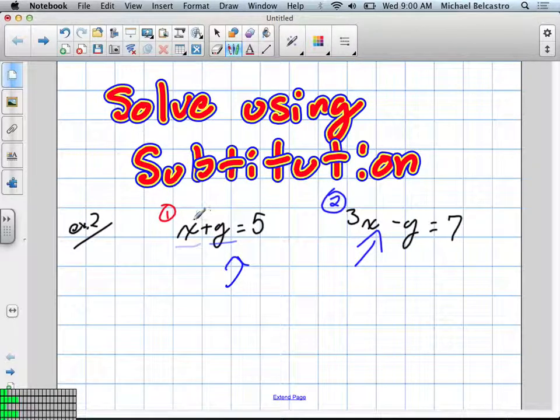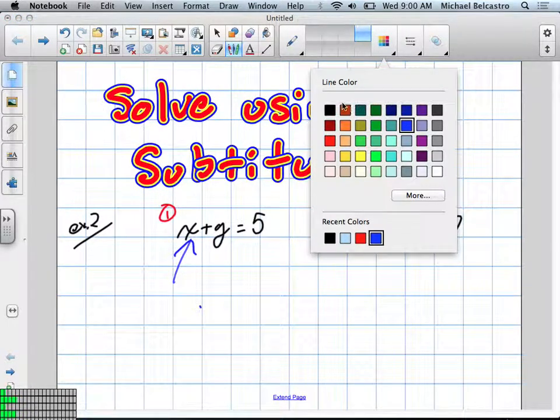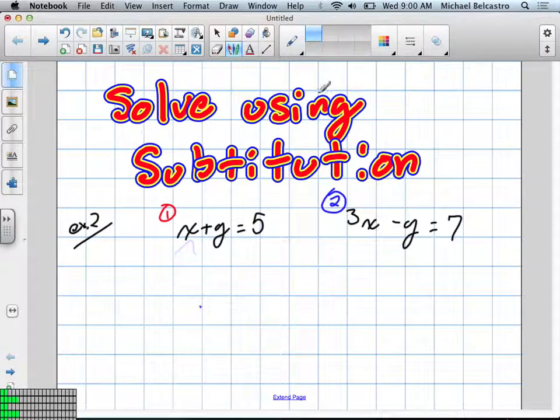What we're going to do is I'm going to set the first equation equal to x. The reason we're going to do that is because we need to know what x is the equivalent of. So in order to do that, I need to move y to the other side of the equation, in which case we're going to get x is equal to 5 minus y. I could have set the equation equal to y. It doesn't really matter.